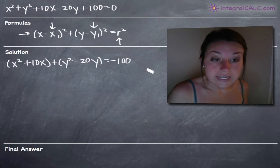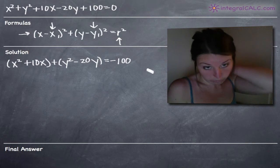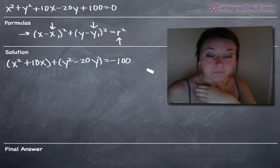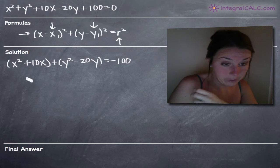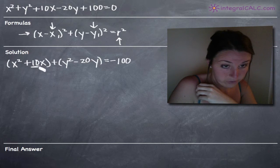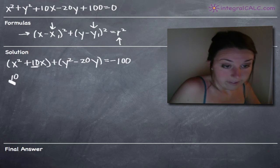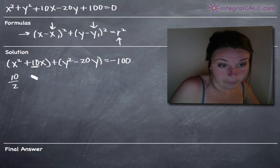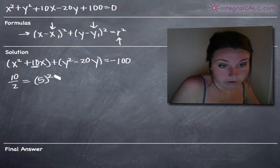Then we're going to need to complete the square in regard to both x and y. If you're having trouble with completing the square, I've got a whole section about that on my website. Basically what we're going to do is take the coefficient on the x term — so 10 — divide that by 2 to get 5, and then square it. 5 squared is 25.